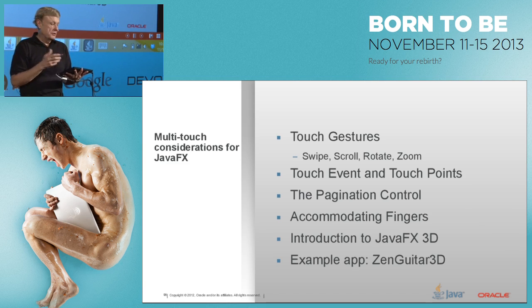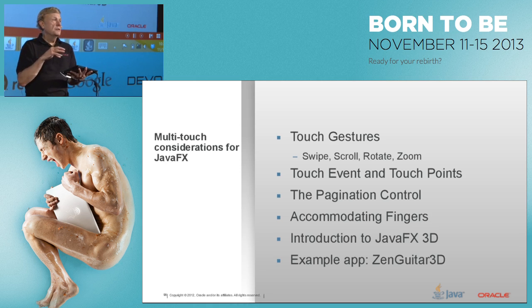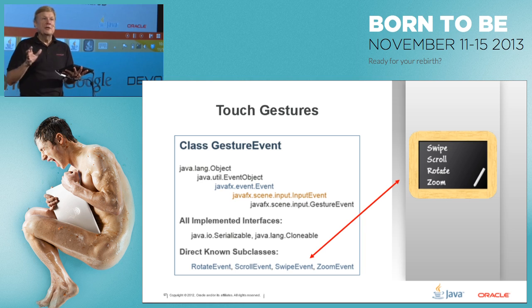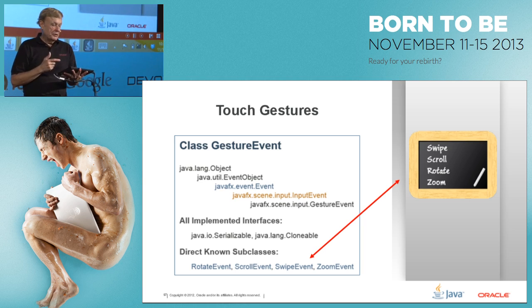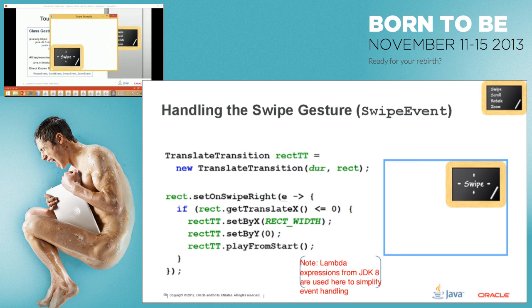Multi-touch features include touch gestures — swipe, scroll, rotate, and zoom. There are touch events and touch points. When you touch the tablet, touch events are created, each with one or more touch points. There's also a pagination control and tips for accommodating fingers being wider than the mouse cursor. For touch gestures: there are four kinds — RotateEvent, Scroll, Swipe, and Zoom. Demonstrating swipe on a chalkboard: swiping causes it to animate in the swipe direction — left, right, up, or down.